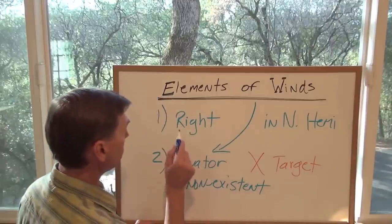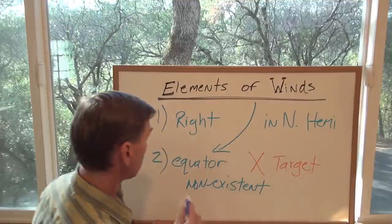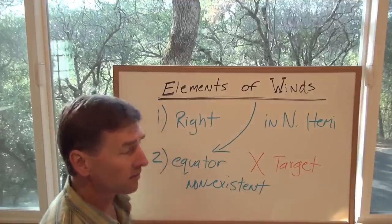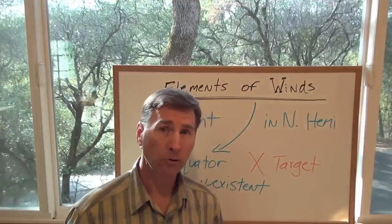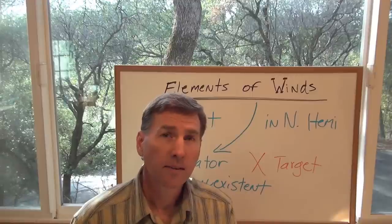And so, number one, it turns to the right in the Northern Hemisphere. Don't forget it. Number two, the equator is non-existent. And as you head toward the poles, it gets stronger.